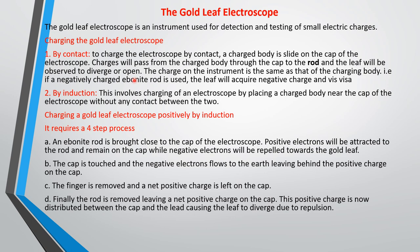For example, an ebonite rod normally carries negative charge when you rub it with fur. If you bring an ebonite rod to rub the cap of the gold leaf electroscope, it will acquire negative charge by contact. The reverse is also the case: if you want positive charge, you bring a positively charged glass rod and rub it on the cap of the gold leaf electroscope — it will acquire positive charge, and you will know by the divergence of the gold leaf.